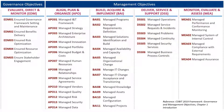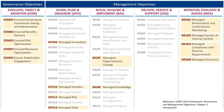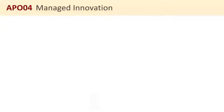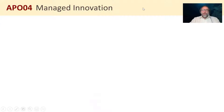In the COBIT core, we have 40 governance and management objectives. The goal here isn't to cover every one of these objectives. What I did is look through each one and identified some of those key objectives critical to the success of your ESG program. One of them stood out really well for me. I'm going to use one as an example of how you might look at the governance or management objective to help you identify the things you need to do within your ESG process — and I'm going to pick Managed Innovation. I think it's a great one to start with.